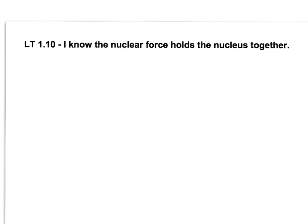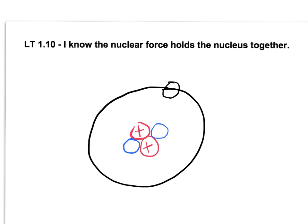So an atom, we know, is made up of protons in the middle with some neutrons and some electrons. So here is a picture of a helium atom, helium-4.